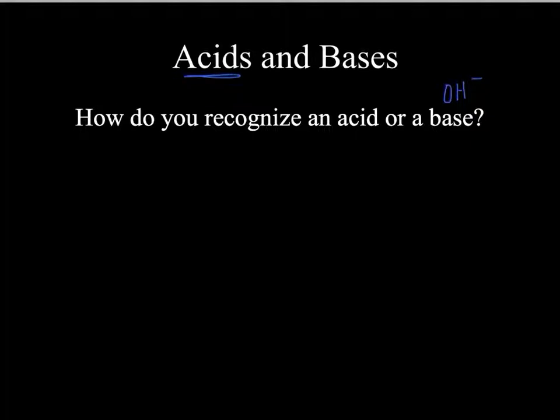Acids, on the other hand, are going to have hydrogen at the start of their formula. For example, HCl would be an acid because it starts with a hydrogen. Another way to recognize you have an acid is whenever you see acid in the name.